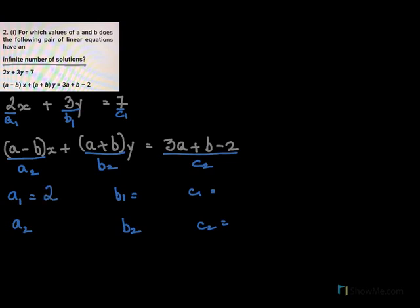So A1 we saw is 2 and A2 is A minus B. Your B1 is 3, B2 is A plus B. Your C1 is 7 and C2 is 3A plus B minus 2. This is step 1.